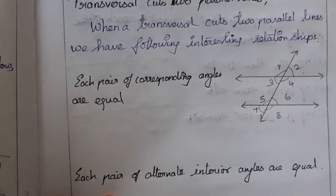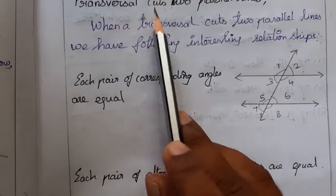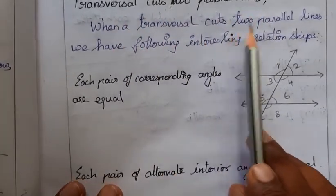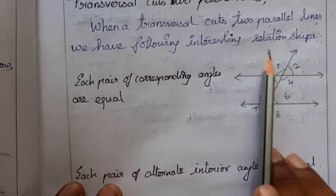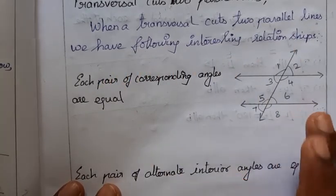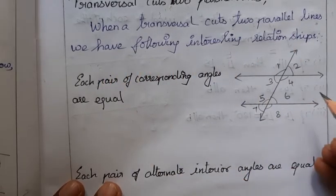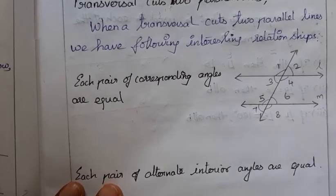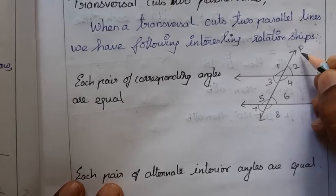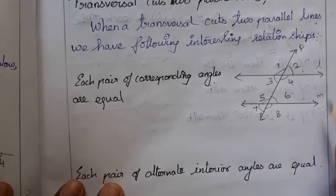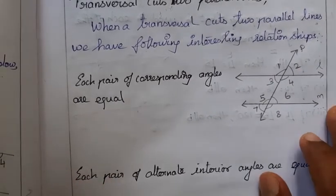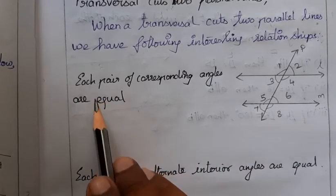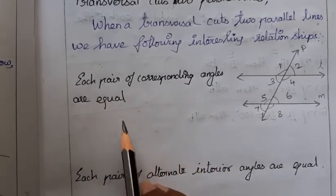Now here are some special cases: when a transversal cuts two parallel lines. Considering lines L and M as parallel, with a transversal cutting them, we get some interesting relationships. The first relationship: each pair of corresponding angles are equal.